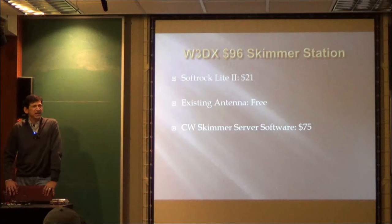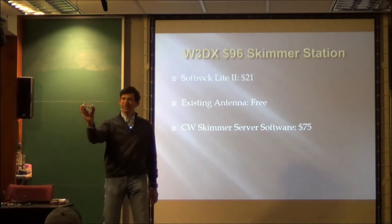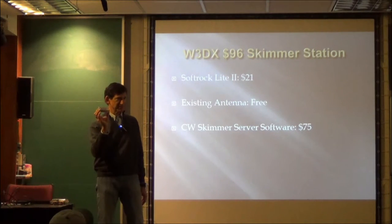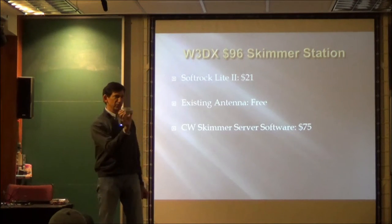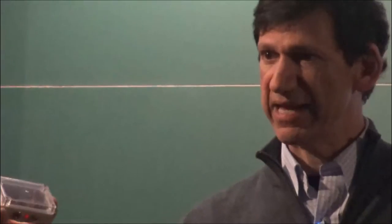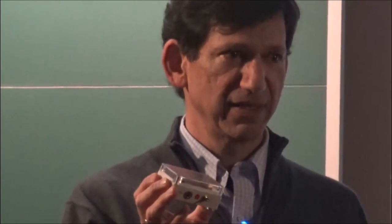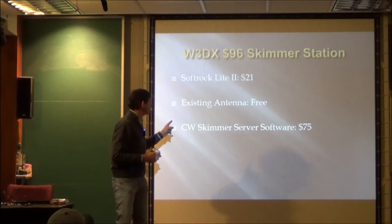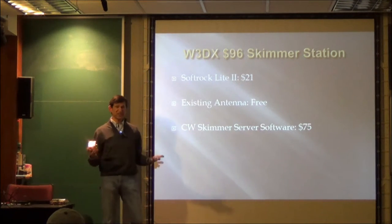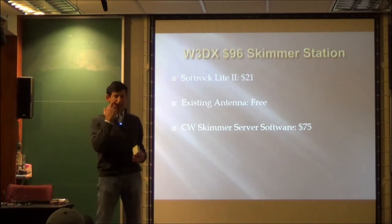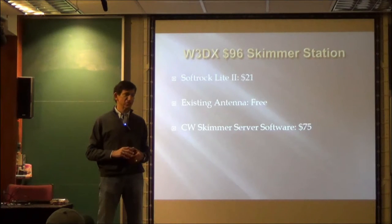Or you could set up a W3DX skimmer station. And this is my receiver right here. It's a soft rock light tube kit, and it cost me $21. So that's the hardware. This is a 20-meter receiver that does a really good job of hearing everything over a 48 kilohertz band. So 14.00 to 14.048? Yeah. But you can actually program the center frequency because it's adjustable. And you can use your existing antenna as long as you're not transmitting on it. That cost nothing because that was there. What if your existing antenna is a Yagi? It's not omnidirectional. Mine was a Yagi. It doesn't matter. It's just gulping in the data.